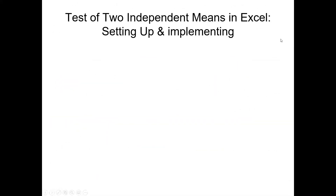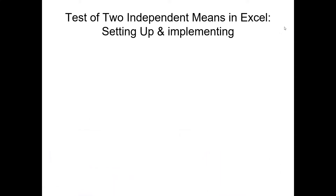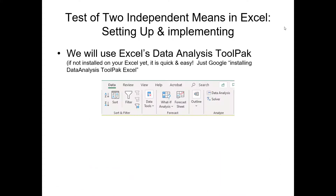To conduct this test of two independent means in Excel, we will use the data analysis tool pack. Navigate to the data analysis tool pack — a tool in Excel. If you haven't installed it yet on your version of Excel, simply Google how to install it on your version. It's quite easy and you won't have any difficulty.